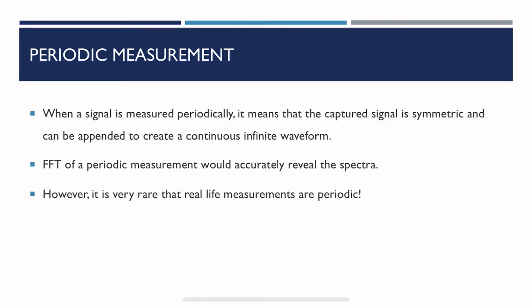So let's start about the different types of measurements. There is periodic measurement and non-periodic measurement. When a signal is measured periodically, it means that the captured signal is symmetric and can be appended to create a continuous infinite waveform. You can append the signal one after the other and you will get the same infinitely long and continuous signal. And if you take the FFT of that signal, you would get the actual spectrum. There is no need for windowing in this case.